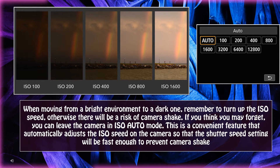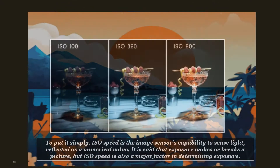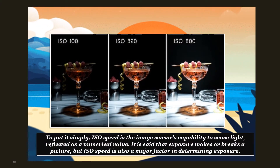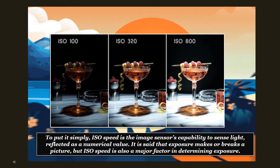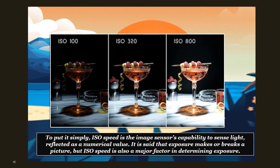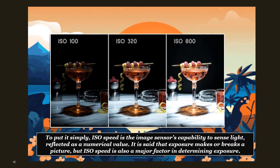When moving from a bright environment to a dark one, remember to turn up the ISO speed; otherwise there will be a risk of camera shake. If you think you may forget, you can leave the camera in ISO auto mode. This is a convenient feature that automatically adjusts the ISO speed so that the shutter speed setting will be fast enough to prevent camera shake. To put it simply, ISO speed is the image sensor's capability to sense light, reflected as a numerical value. It is said that exposure makes or breaks a picture, and ISO speed is also a major factor in determining exposure.